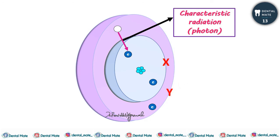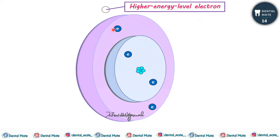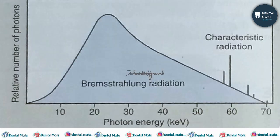A vacancy is also created at the outer shell, and a higher-energy-level electron comes and fills that vacancy, again producing a characteristic photon. Electrons from various orbitals may be involved, giving rise to other characteristic photons. The energy of the photons released is characteristic of the target material. This is shown on the characteristic radiation graph. Characteristic radiation is basically a chance phenomenon — these photons are produced only when the incident electron ejects an inner orbital electron of the tungsten atom.